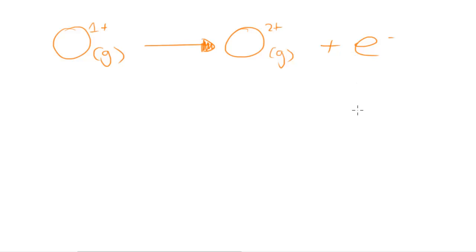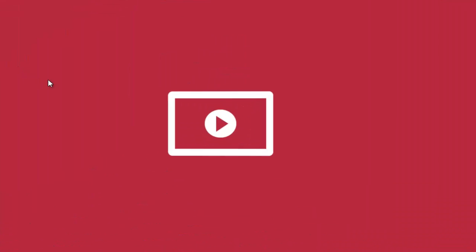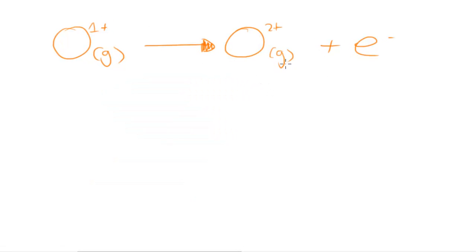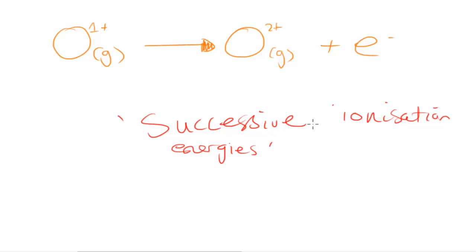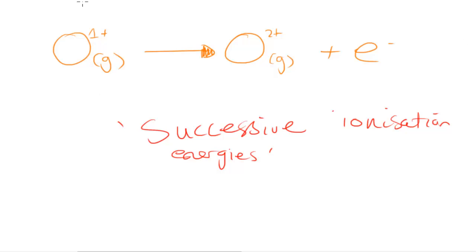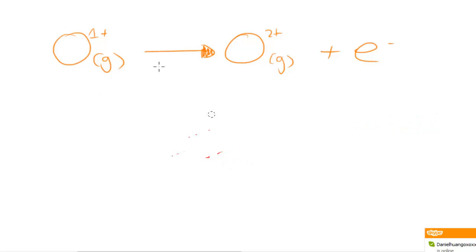This is the successive ionization energy — this particular one represents the second ionization energy of oxygen, because what we're doing is removing a subsequent electron after the first electron has already been removed. We call this successive ionization energies.